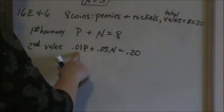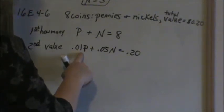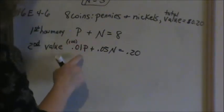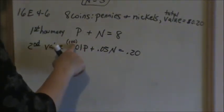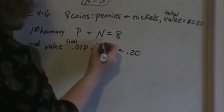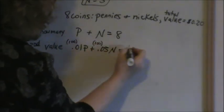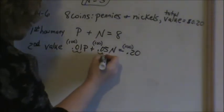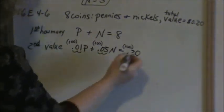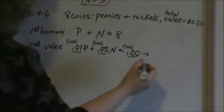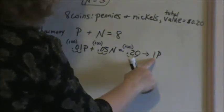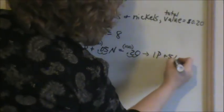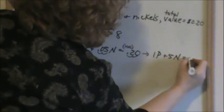The first thing I always recommend is getting rid of these decimals. Every one has two decimal places, so if you multiply each one by 100 — that's the number of zeros you need — it will move your decimal place over two times. So my new equation will be 1p plus 5n equals 20.